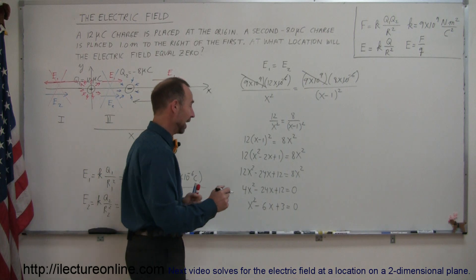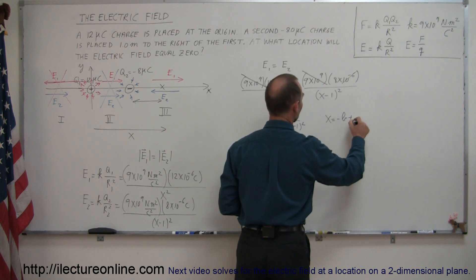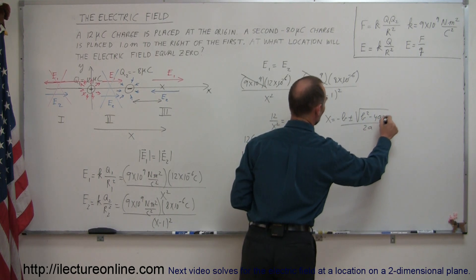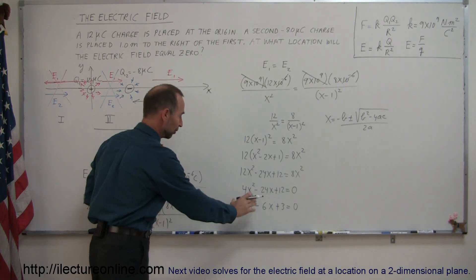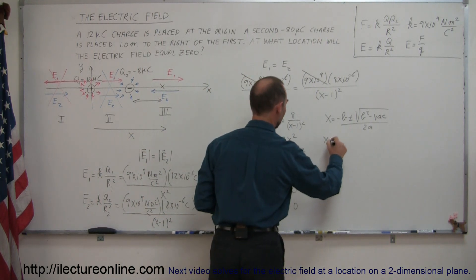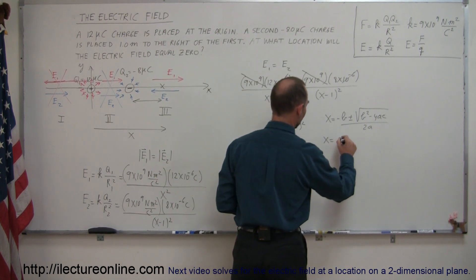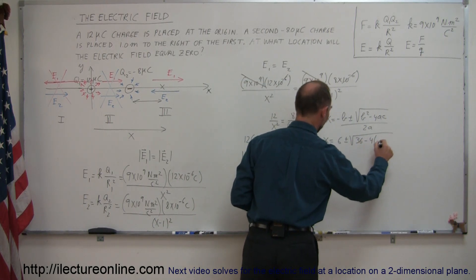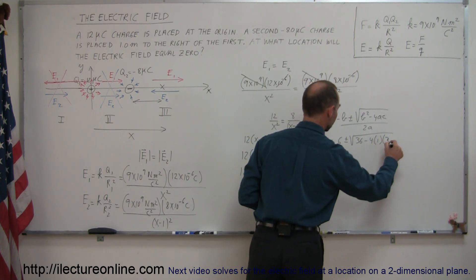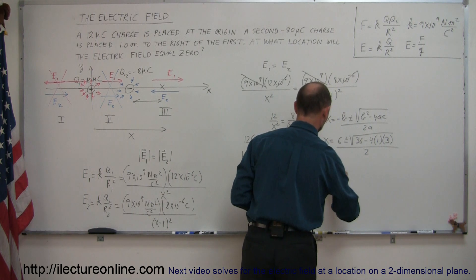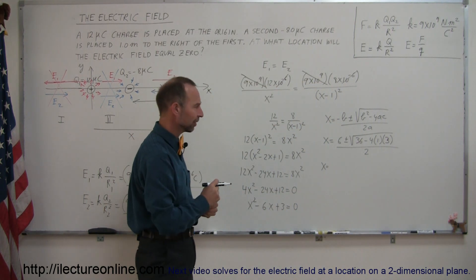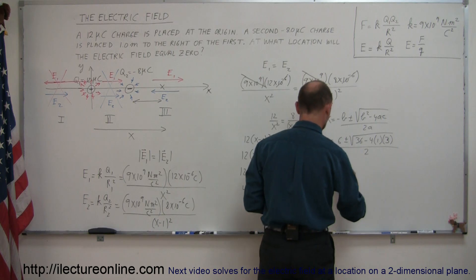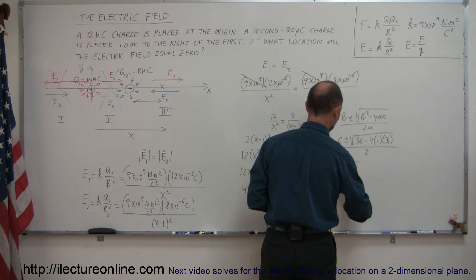Applying the quadratic formula x = (−b ± √(b²−4ac)) / 2a, with a=1, b=−6, c=3: x = (6 ± √(36−12)) / 2 = (6 ± √24) / 2. Simplifying: 36 minus 12 is 24, so x = (6 ± √24) / 2.